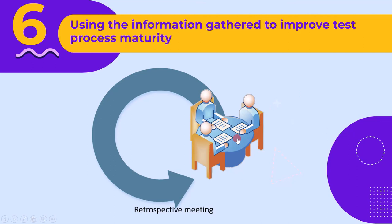The sixth activity is using the information gathered to improve test process maturity. Based on the information gathered from the test closure meeting, a quality team then tries to address all possible points to improve the test process.